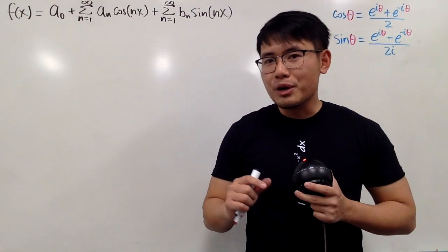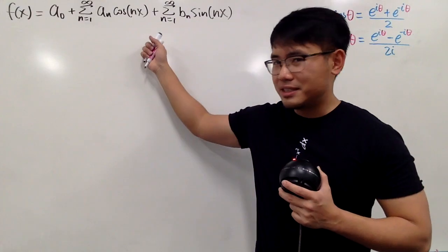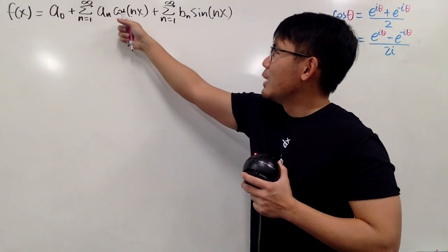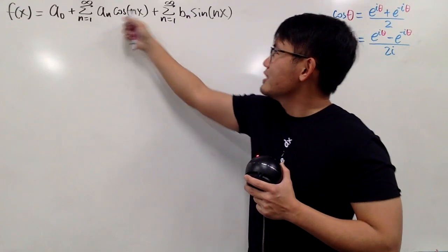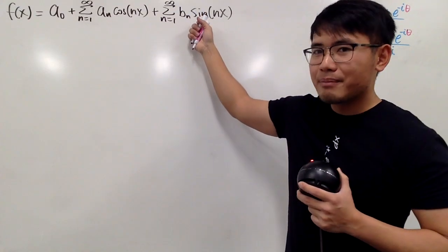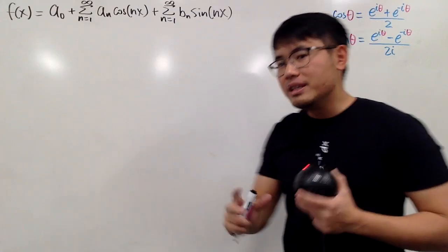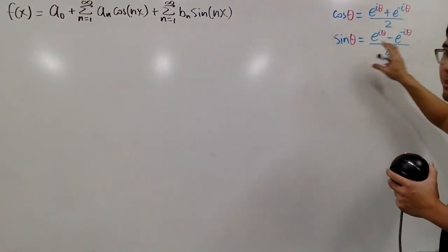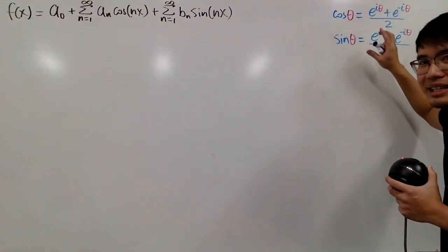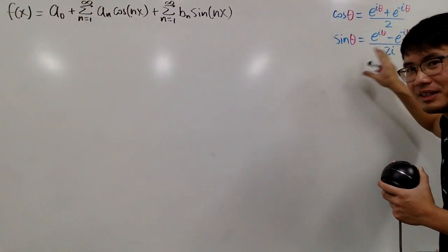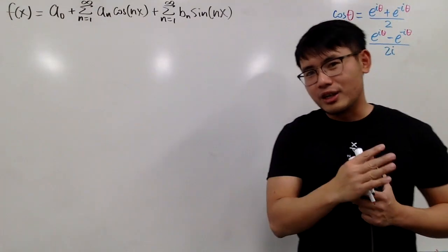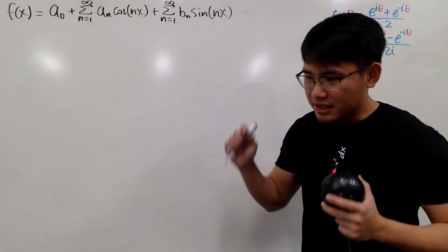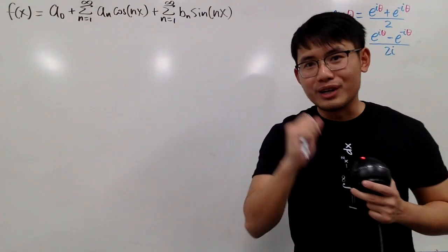Today, we are going to make this complex. And to do so, look here — we have cosine and sine. We did talk about the complex definition of cosine and sine in the past. If you guys haven't seen that video, be sure you go check that out as well. I will have the links in the description for your convenience.